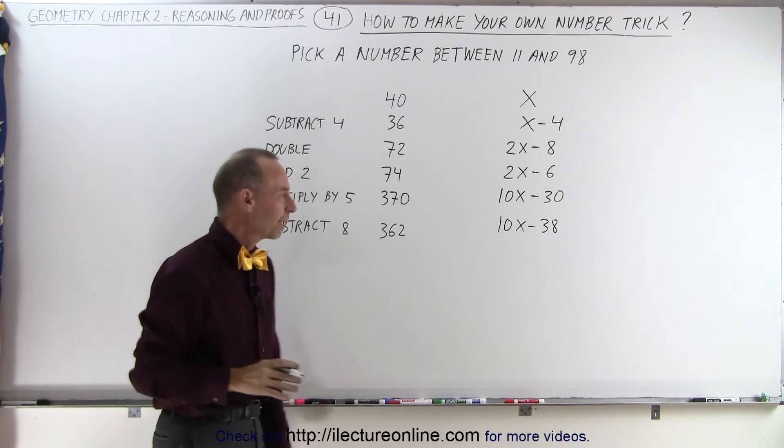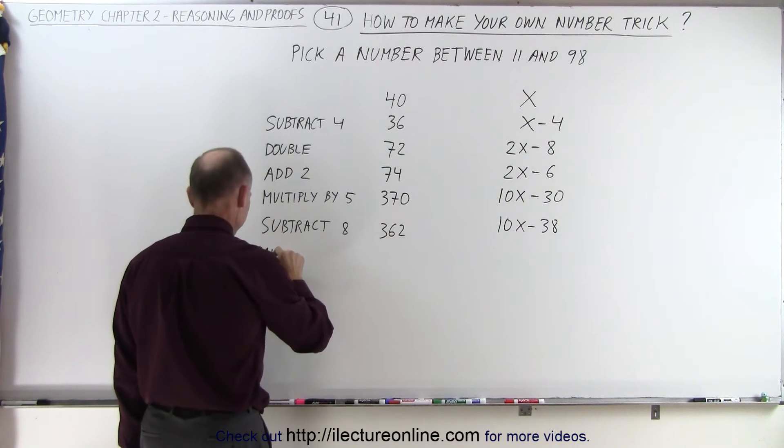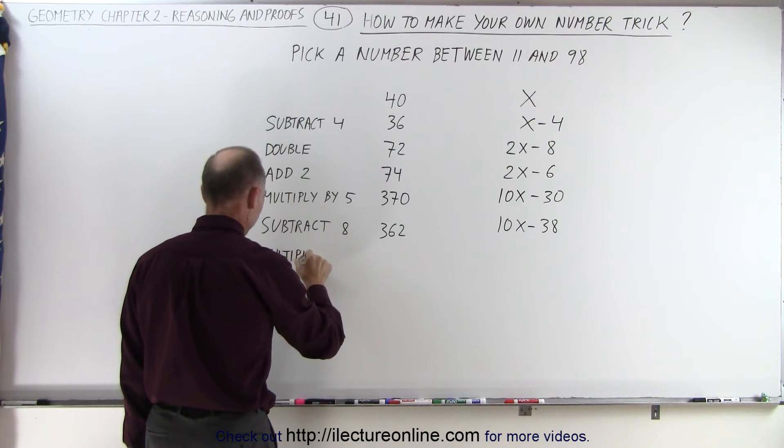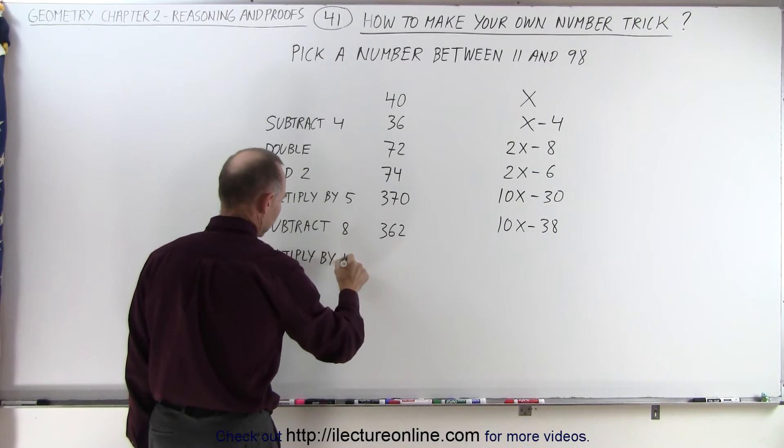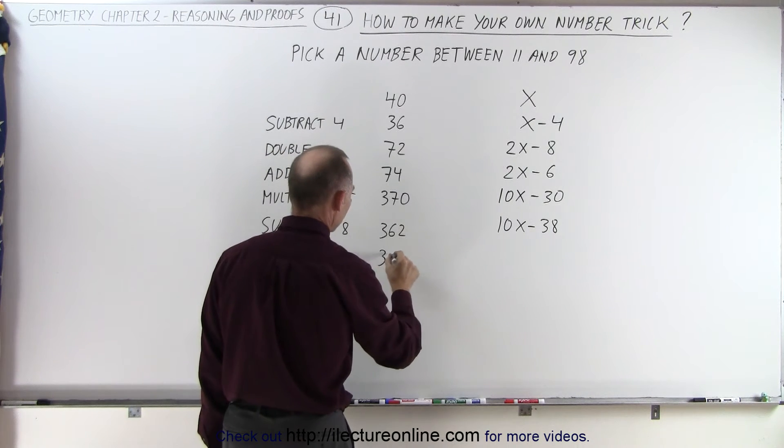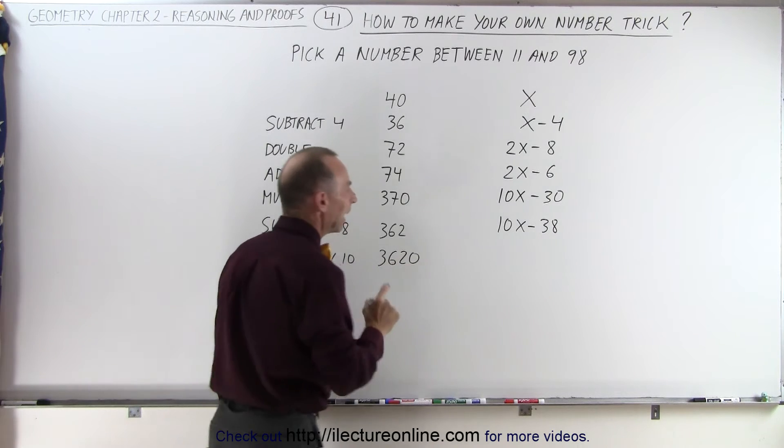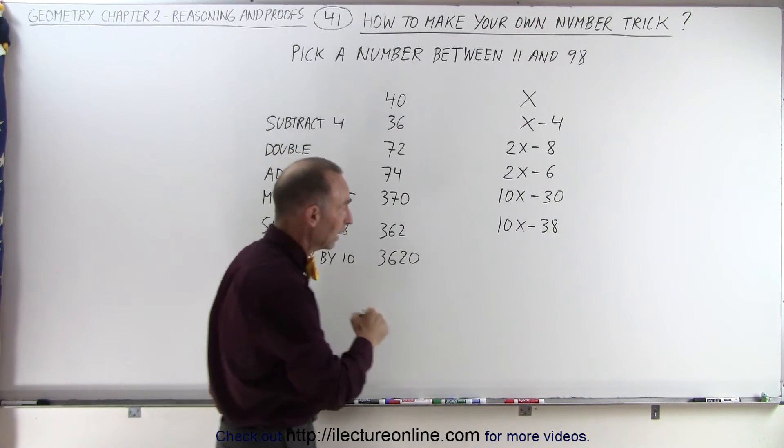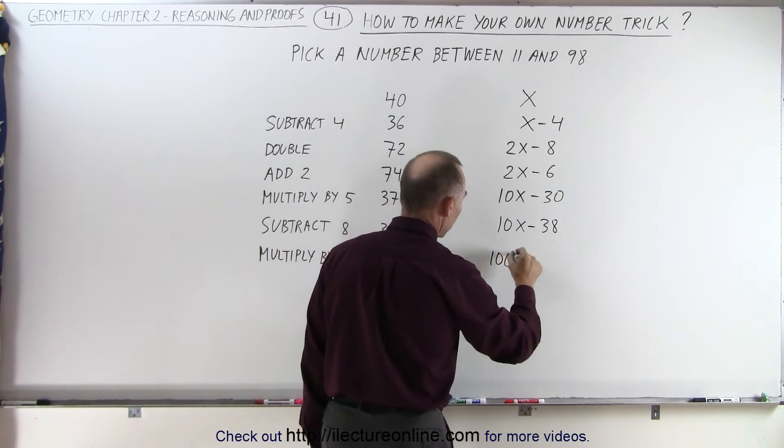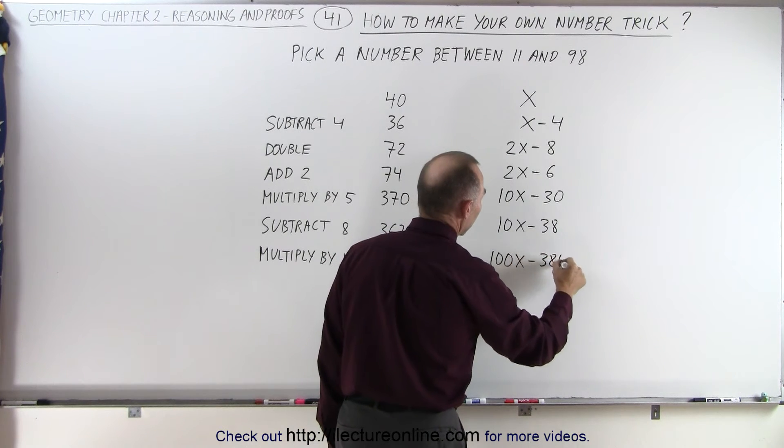Now tell them multiply by 10. So when you do that, you get 3620. And then you multiply that by 10, and you get 100x minus 380.